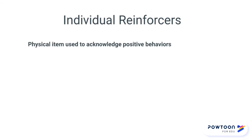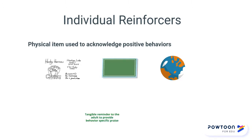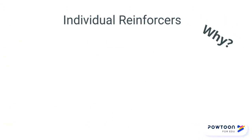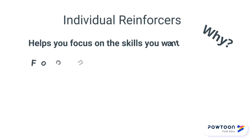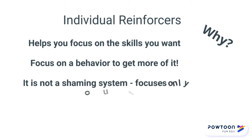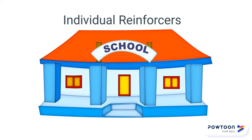Individual reinforcers are the physical items you use to acknowledge positive behaviors — the Husky Euro, the J-Buck, the Marble. They're a tangible reminder to the adult to provide behavior-specific praise. When you use individual reinforcers, it helps you focus on the skills you want to see. When you focus on a behavior, you get more of it, so focus on the positive. This is not a shaming system and focuses only on positive behavior. PBIS teaches us to use individual reinforcers across the whole school setting — whether building-wide, in the classroom, or in smaller settings like small group or individual.